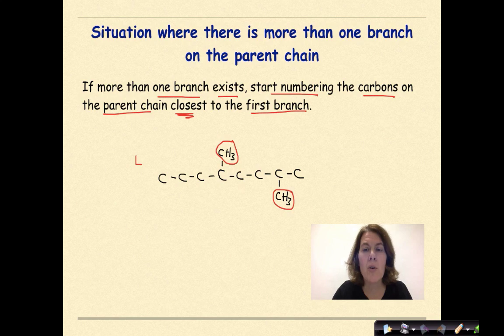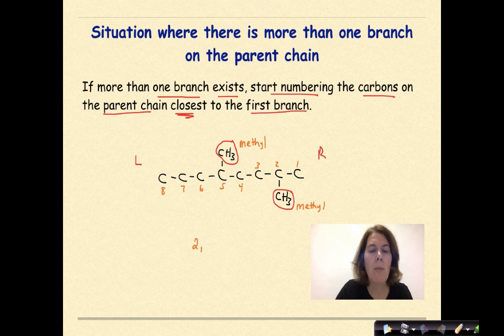So the question here is which end do we start counting on to number our parent chain? Should we go from left to right or from right to left? Now, if you said we should start numbering from right to left, you are correct because we want our branches to have the lowest possible number on the parent chain that we can. So this would be carbon 1, 2, 3, 4, 5, 6, 7, 8. So we are dealing with octane here. And then we know that this is a methyl group and this is a methyl group. So we're going to have a dimethyl. So when we do this and we name this, this will be 2, 5-dimethyloctane.